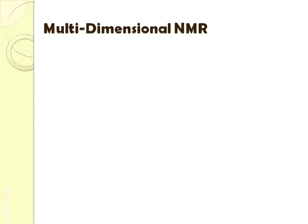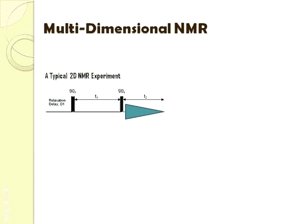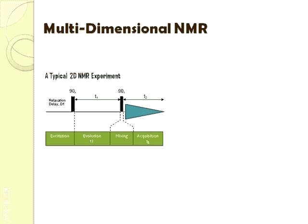We begin by reviewing the general structure of a 2D experiment, as formalized by Ernst. Here we can see a typical 2D experiment — COZY in this example. The experiment is divided into four stages: excitation, often preceded by some relaxation delay d1, followed by evolution, mixing, and finally acquisition. A typical 2D spectrum is obtained by repeating the experiment, varying t1 incrementally with each iteration, for a total of N iterations.